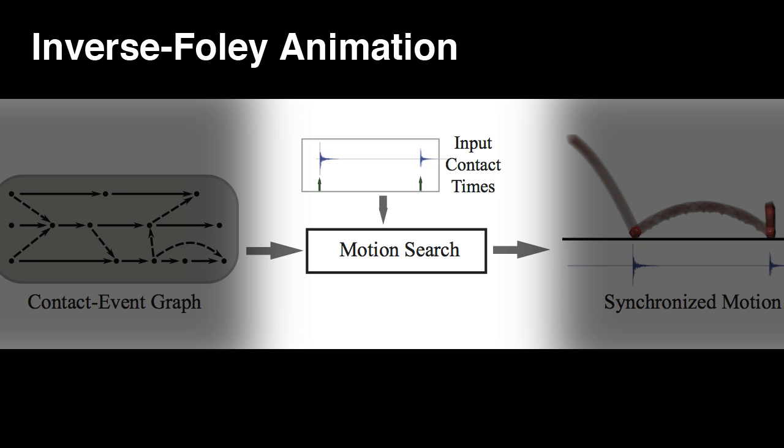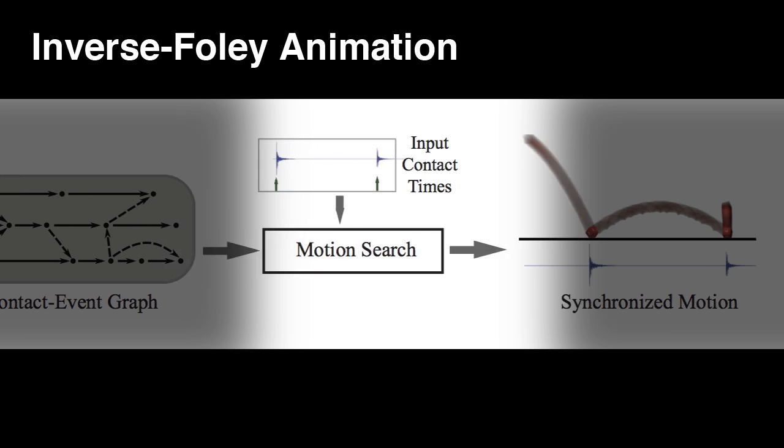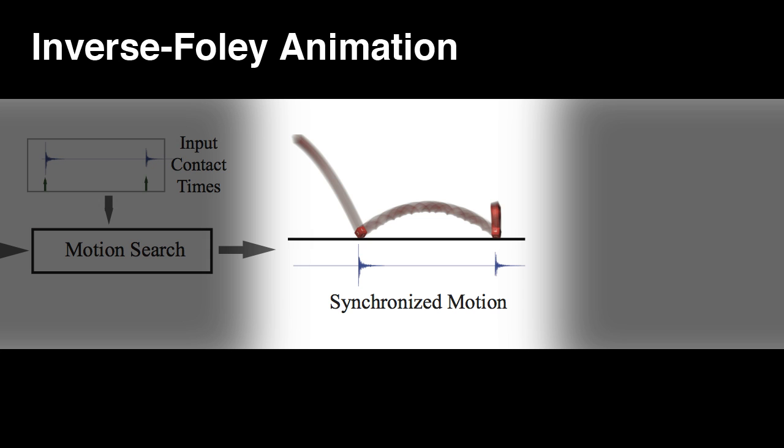Given an input sound's contact time information, we search the contact graph to find a sequence of motions which have similar contact events at similar times.